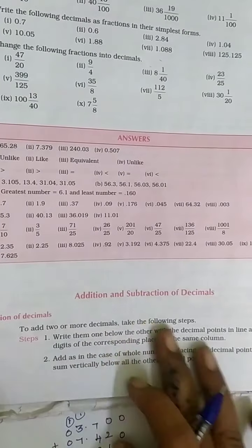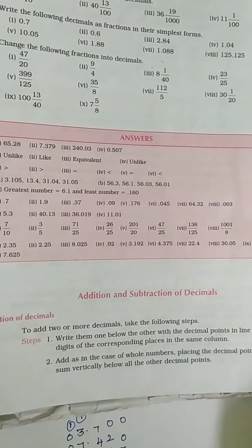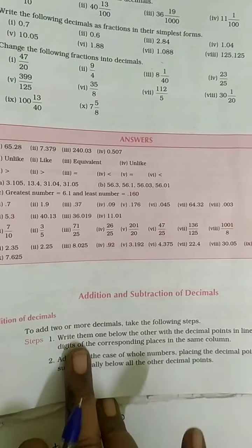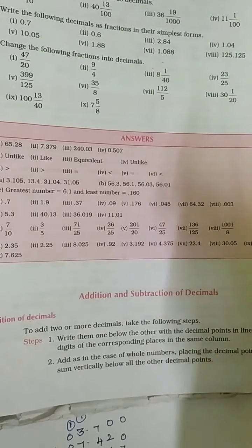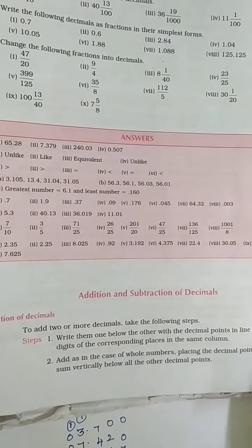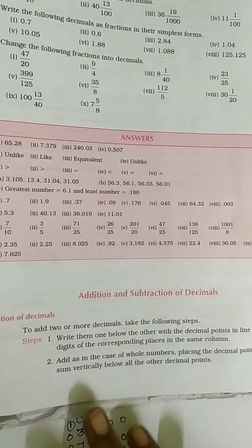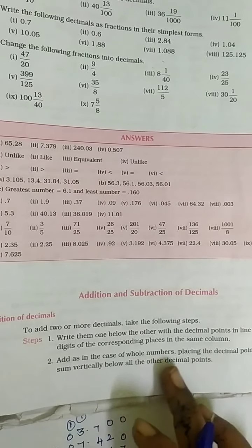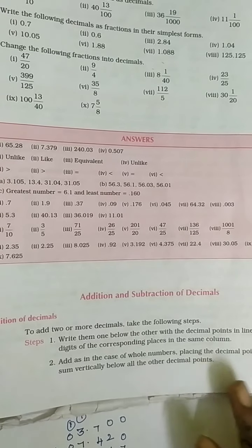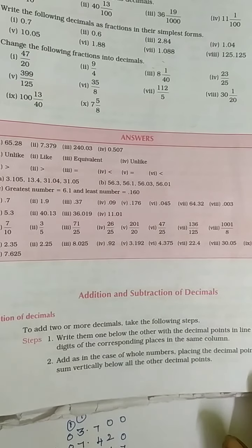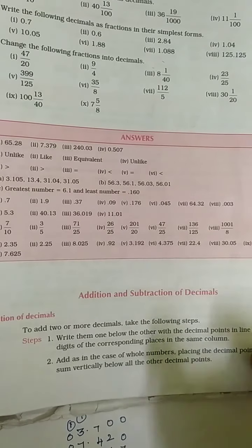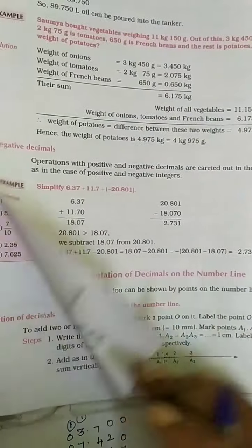So how will you add or subtract decimals? When you add 2 or more decimals, write one below the other with the decimal points in the same line. And as in the case of whole numbers, place the decimal point in the sum vertically below the decimal point. These are the steps we are going to follow.